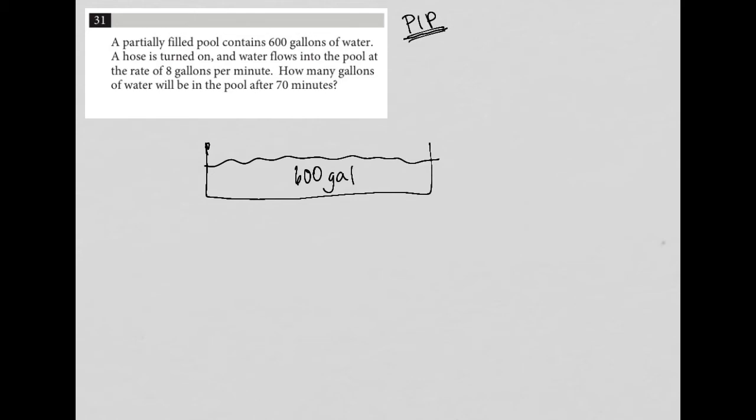A hose is turned on and water flows into the pool at the rate of eight gallons per minute. Okay, so this arrow represents the hose and the water is going in at eight gallons per minute. And how many gallons of water will be in the pool after 70 minutes?